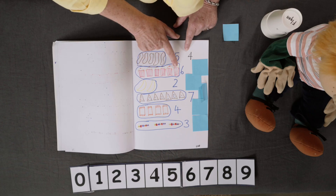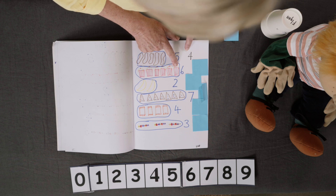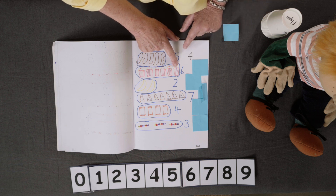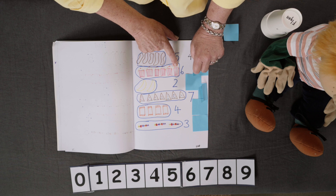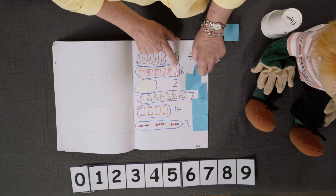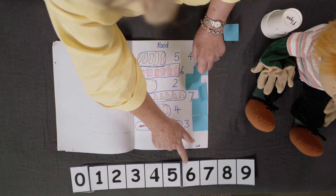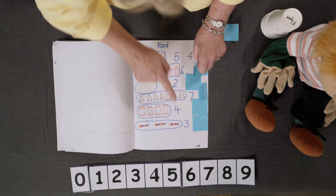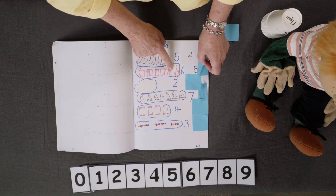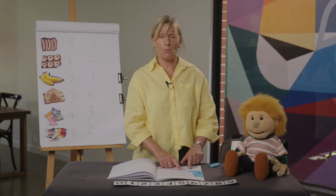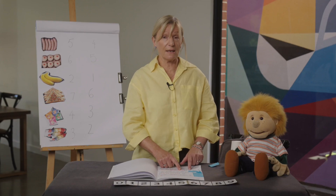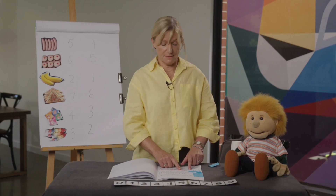He had six cupcakes, which would be fabulous if six people turn up to the picnic, but what if there was one less than six? What if only five people came to the picnic? Then one of those cupcakes would be wasted.